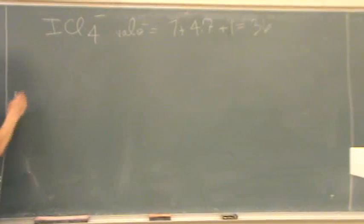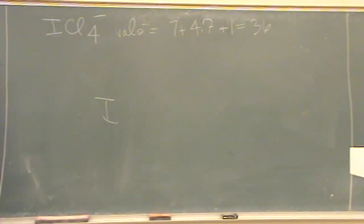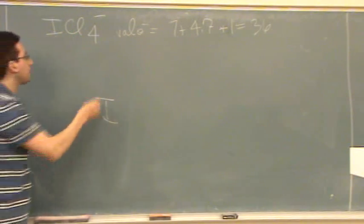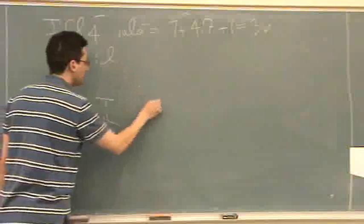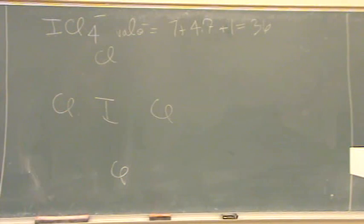Just from what I taught you before, the iodine has to be in the middle. Whenever you see an atom and then a list of atoms after it, the lists are the ones on the outside. So Cl, Cl, Cl, and Cl. So there's my skeleton, that's the second part I do, and now I draw in the bonds.